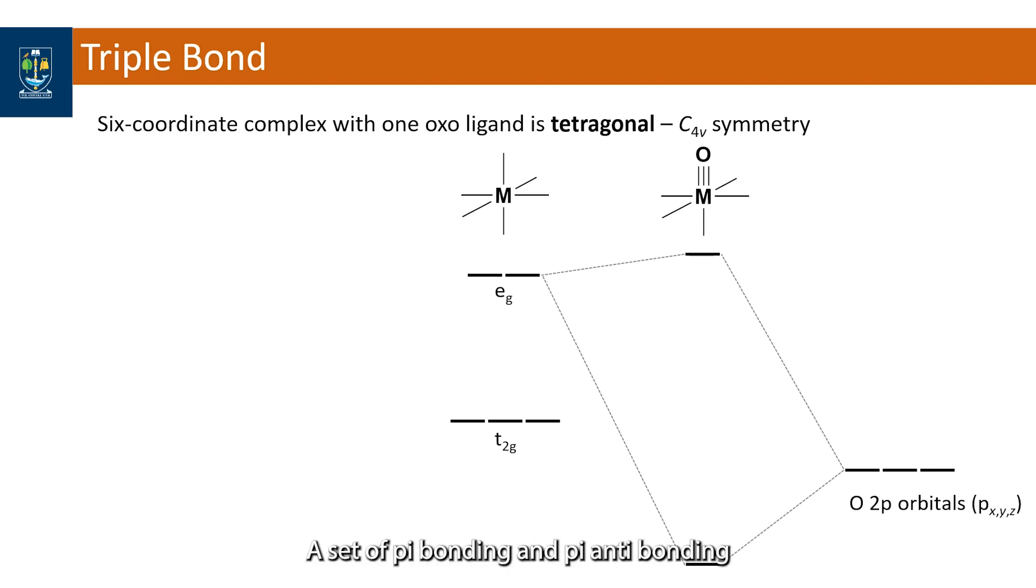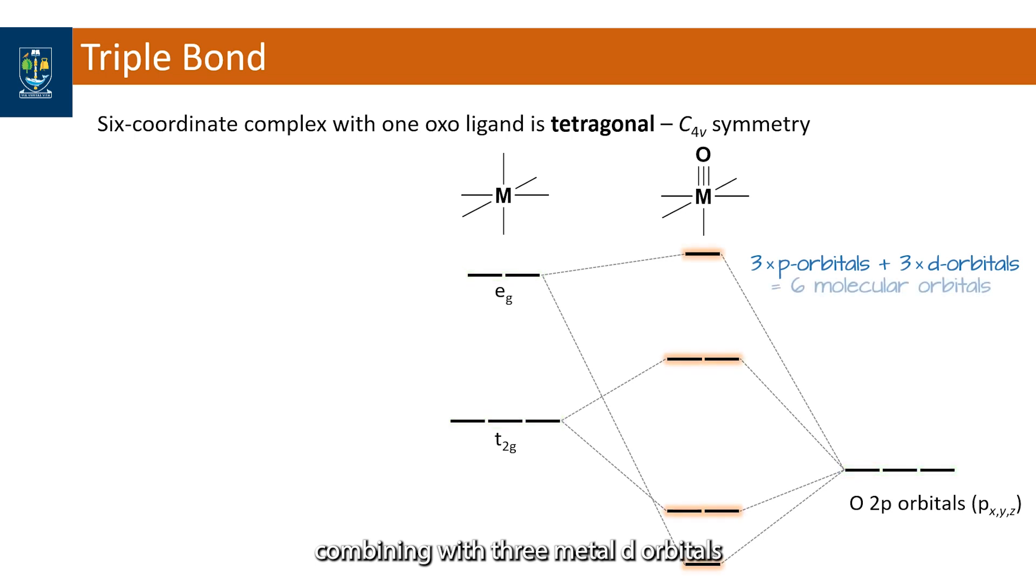A set of pi bonding and pi antibonding molecular orbitals result from the overlap of the px and py orbitals of oxygen with the dxz and dyz orbitals of the metal. So we have three oxygen atomic orbitals combining with three metal d orbitals to give three bonding and three antibonding molecular orbitals.